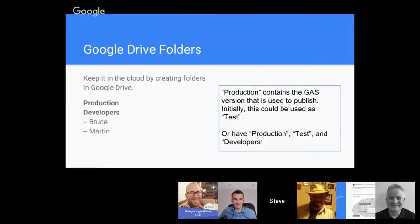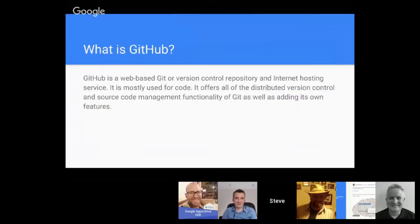Keep it in the cloud by creating folders from Google Drive. One simple approach is to have a production folder and separate developer folders — for Bruce, Martin, myself, or whoever. The idea is to have these buckets separated: a production environment, a test folder for QA, and raw development code. GitHub is really a version control repository that handles things very nicely. It's widely used — in fact Google themselves use it — and we'll show you how to interact with the script IDE through this version control software.